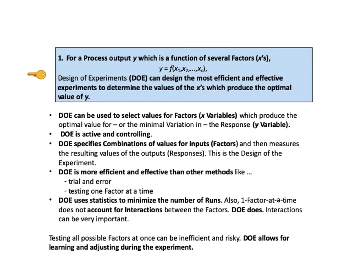DOE is more efficient and more effective than other methods like trial and error, which is by definition chancy and rarely gets good results. Testing one factor at a time can require a large number of experimental runs and does not account for interactions between the factors — DOE does. DOE uses statistics to minimize the number of runs. Interactions can be very important. Testing all possible factors at once can be inefficient and risky, and the phase approach of DOE allows for learning and adjusting during the experiment.